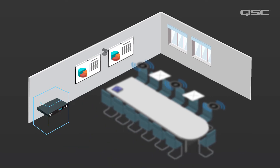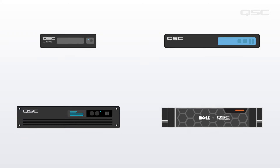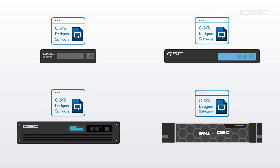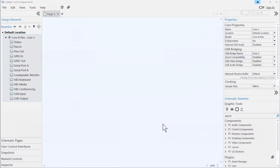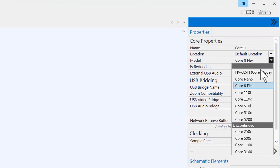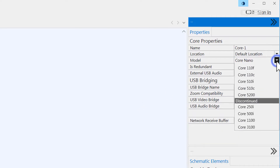Knowing which core is right for you will depend on the needs of your system. But what's important is that all cores run the same Q-SYS OS and offer all the same software-based functionality, and run designs from the same design tool — Q-SYS Designer Software. In fact, the first thing you'll probably do when creating a design is to choose which core you intend on deploying it to with a simple drop-down menu in Designer, although you could easily change that later if your processor demands have evolved.